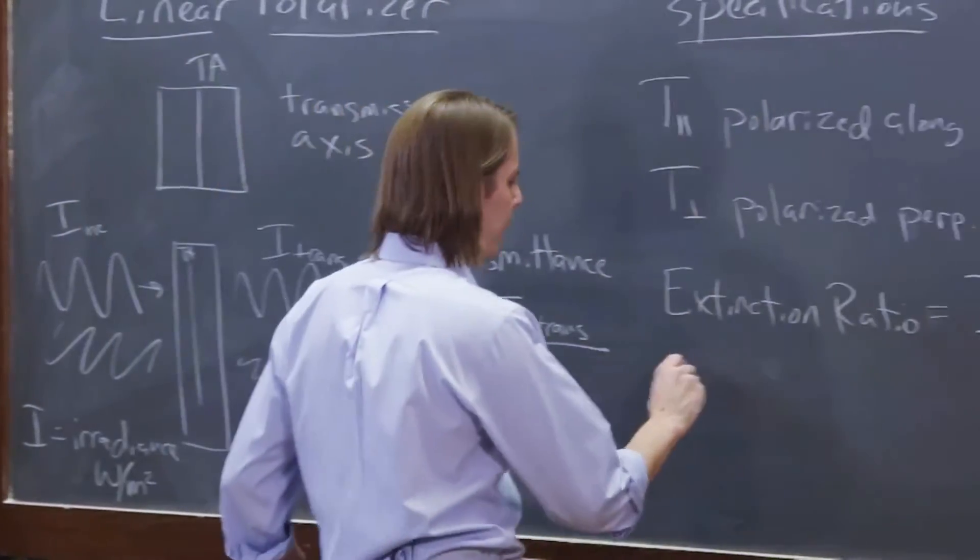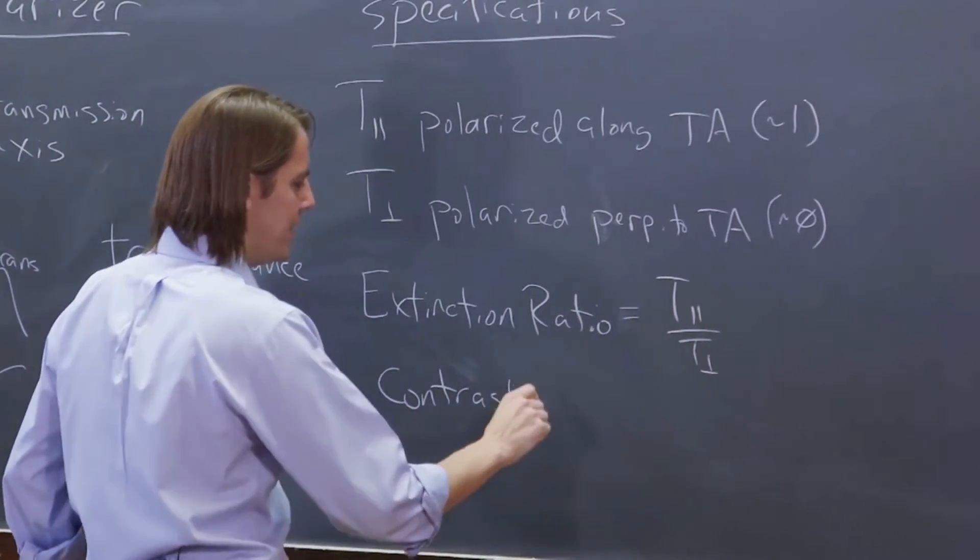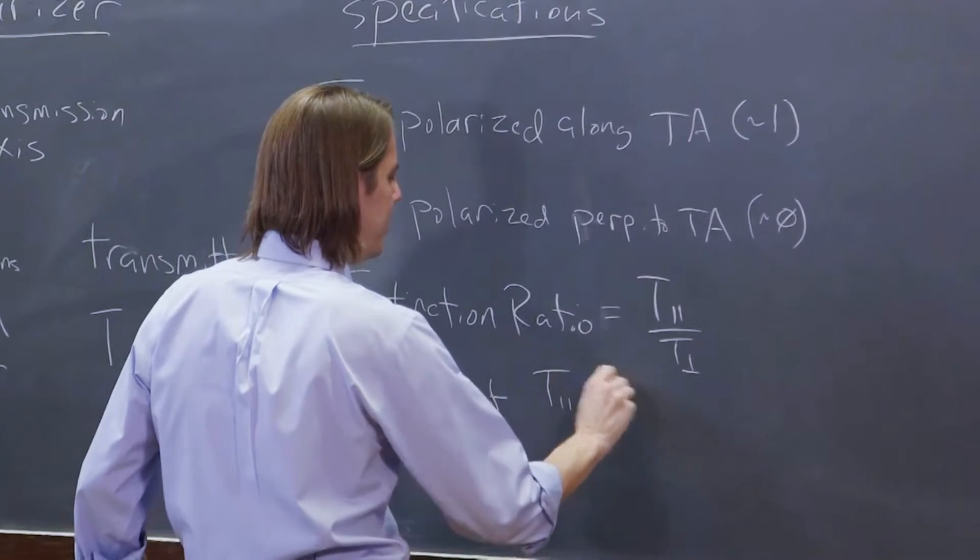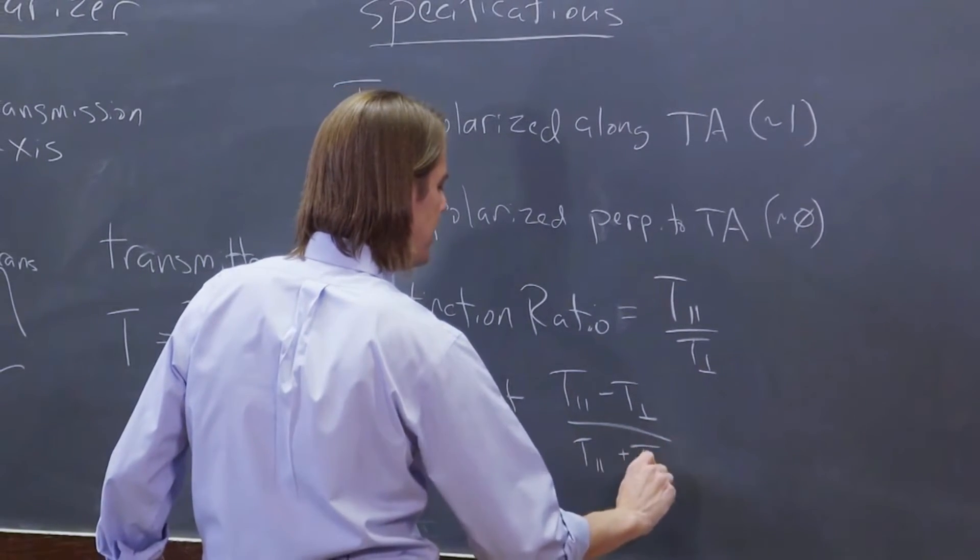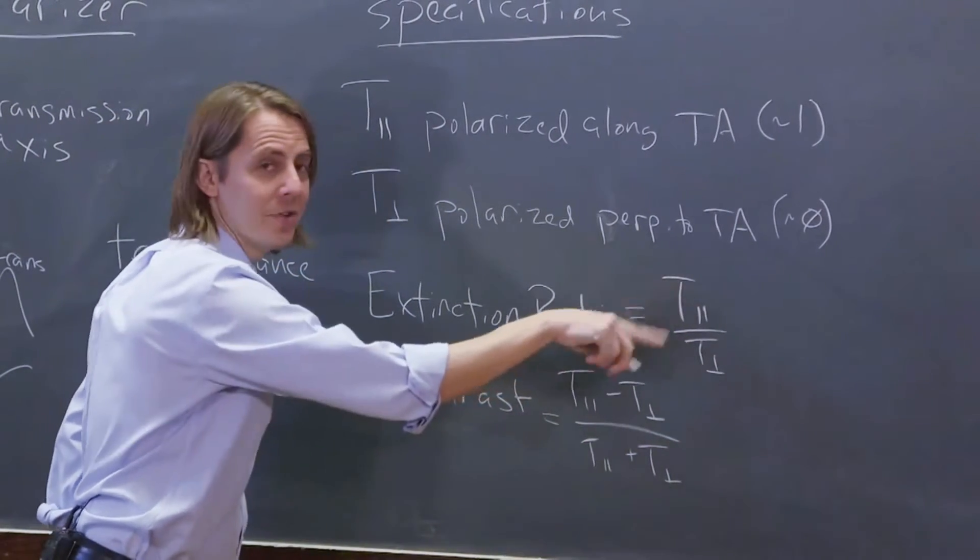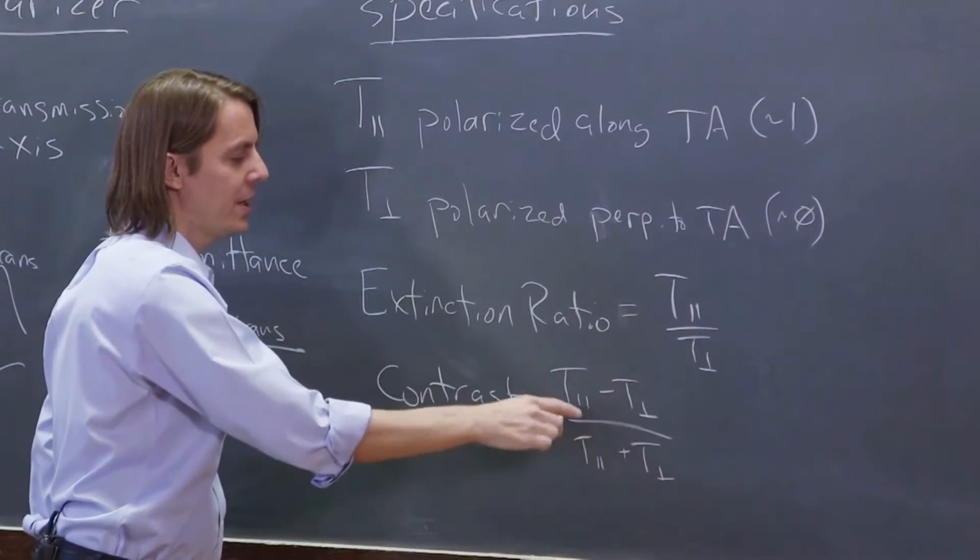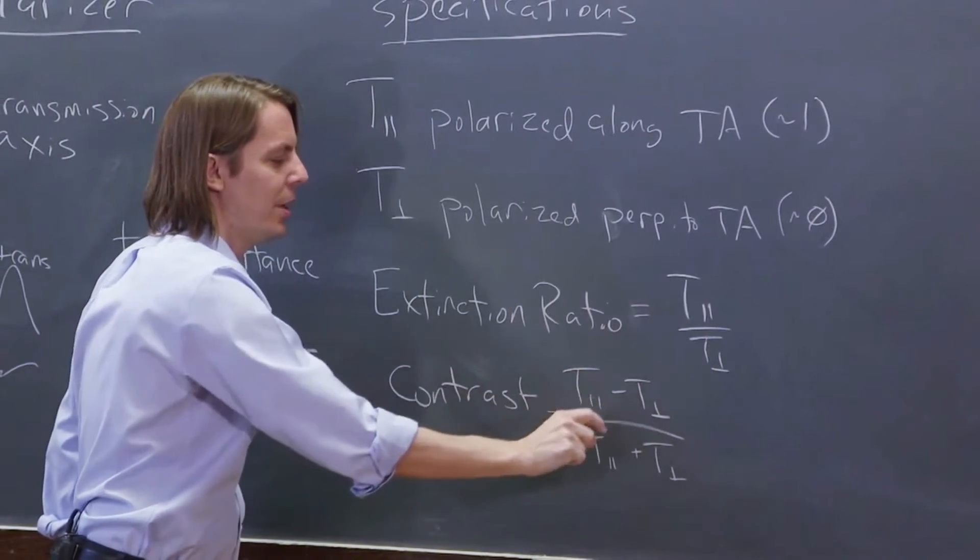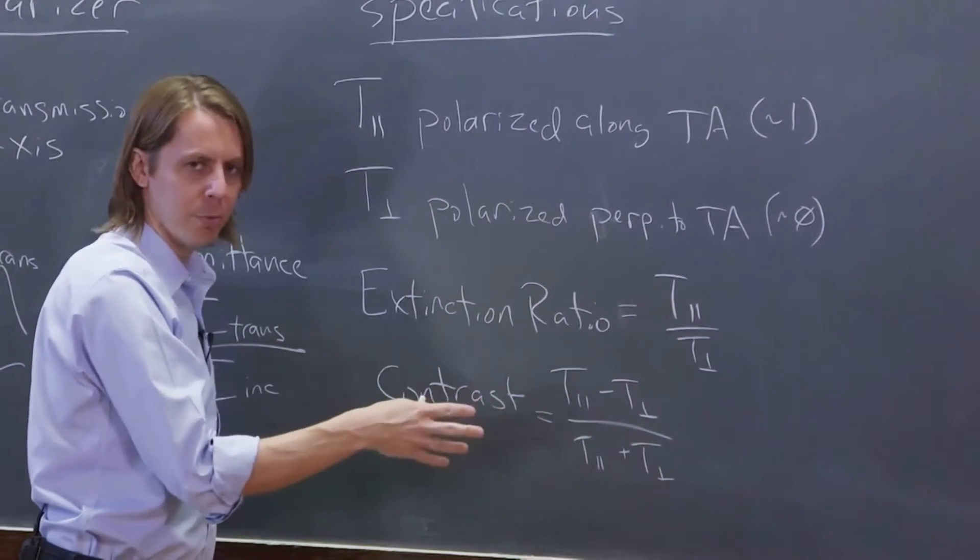Another one is the contrast. They may specify the contrast. And that is T parallel minus T perpendicular over T parallel plus T perpendicular. And this one you want to be as high as possible, 10,000 and even higher. This one you want to be one. You want to get as close to one as you can. A big number minus a teeny number over a big number plus a teeny number. These two are pretty close and you're shooting for one.